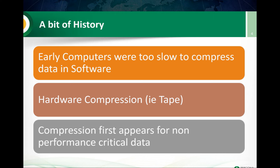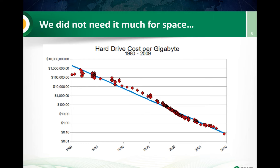What happened gradually is compression first appeared for non-performance-critical data — when it comes to databases or file systems, if data is rarely accessed, we may be able to compress it. It's worth noting that we didn't really need compression that much for about 30 years. You can see this graph, which uses a log scale, and from the early ages to 2010, we had the cost per gigabyte drop about eight orders of magnitude — from about a million dollars per gigabyte to less than one cent in 2010.